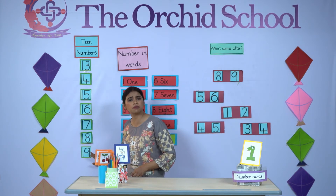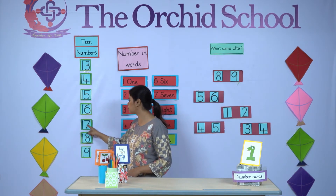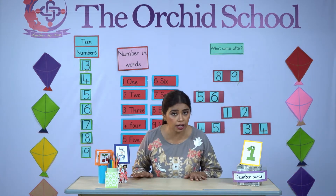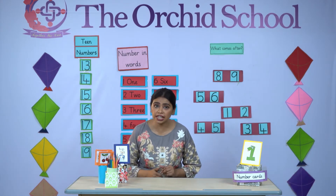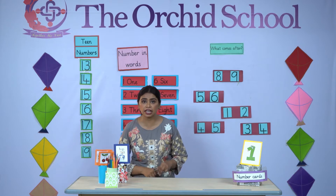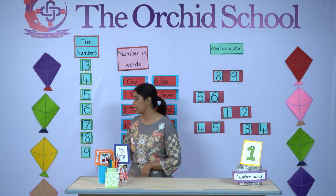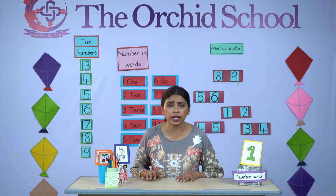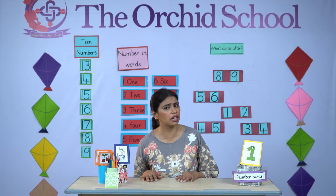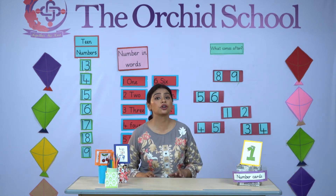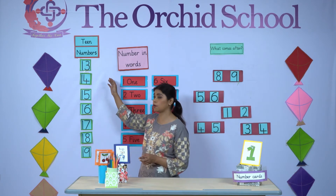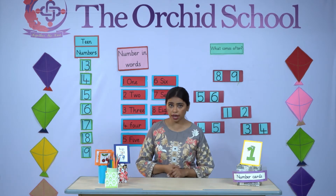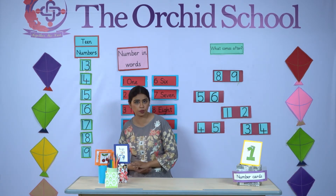So, how many teen numbers do we have? Let's count: 1, 2, 3, 4, 5, 6, 7 — we have 7 teen numbers: 13, 14, 15, 16, 17, 18, and 19. What comes after 19? Yes, it's 20. Are we using 'teen' in 20? No. So 20 is not a teen number. In the same way, 11 and 12 are not teen numbers.